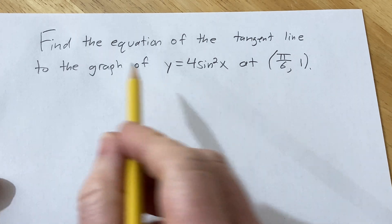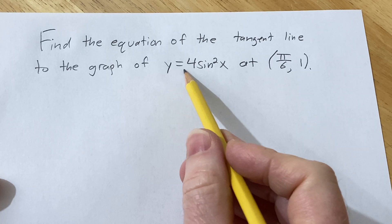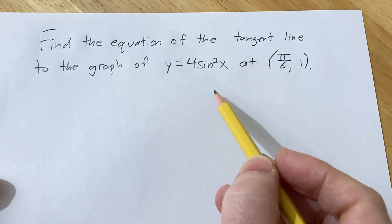Hello, in this problem we are going to find the equation of the tangent line to the graph of y = 4sin²x at the point (π/6, 1). Solution.